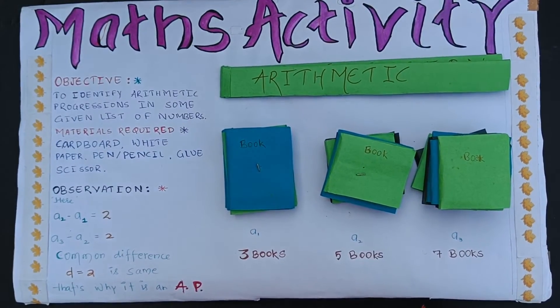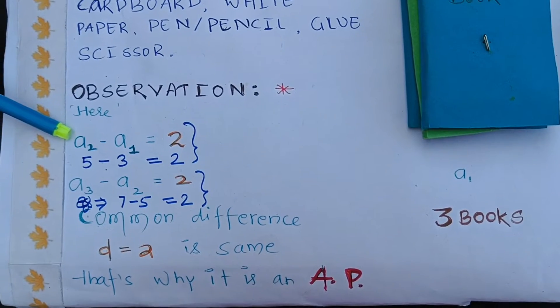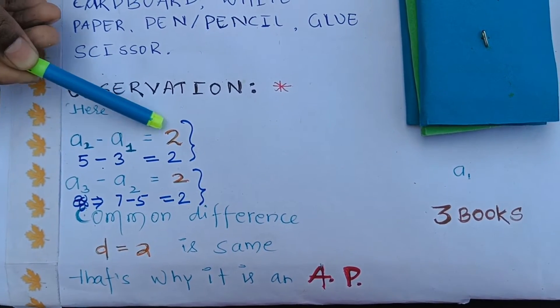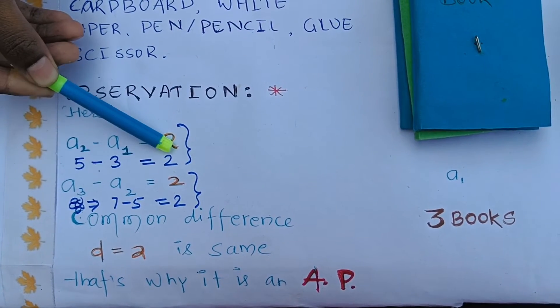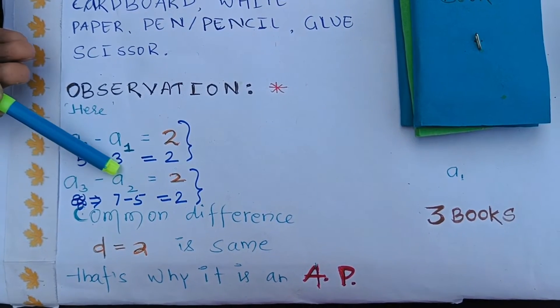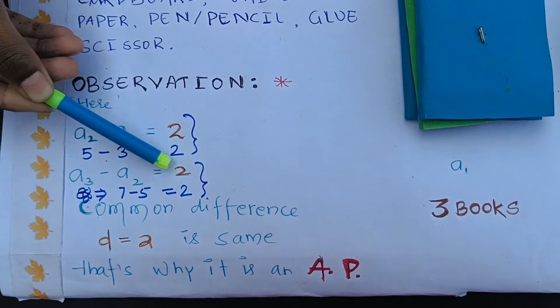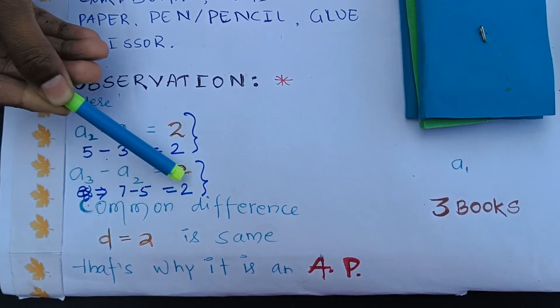Let us find their common difference. So, A2 minus A1 is 2, means 5 minus 3 is 2. A3 minus A2 is 2, means 7 minus 5 is 2.